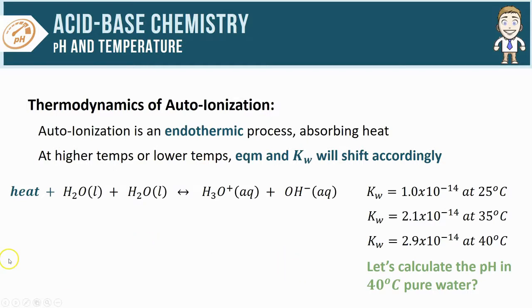So let's start by setting up an ICE table. Initially I have no products made: 0, 0. As we approach equilibrium, I'll be producing equal amounts of each product, so once equilibrium is achieved I should have equal quantities of H3O+ and OH-.